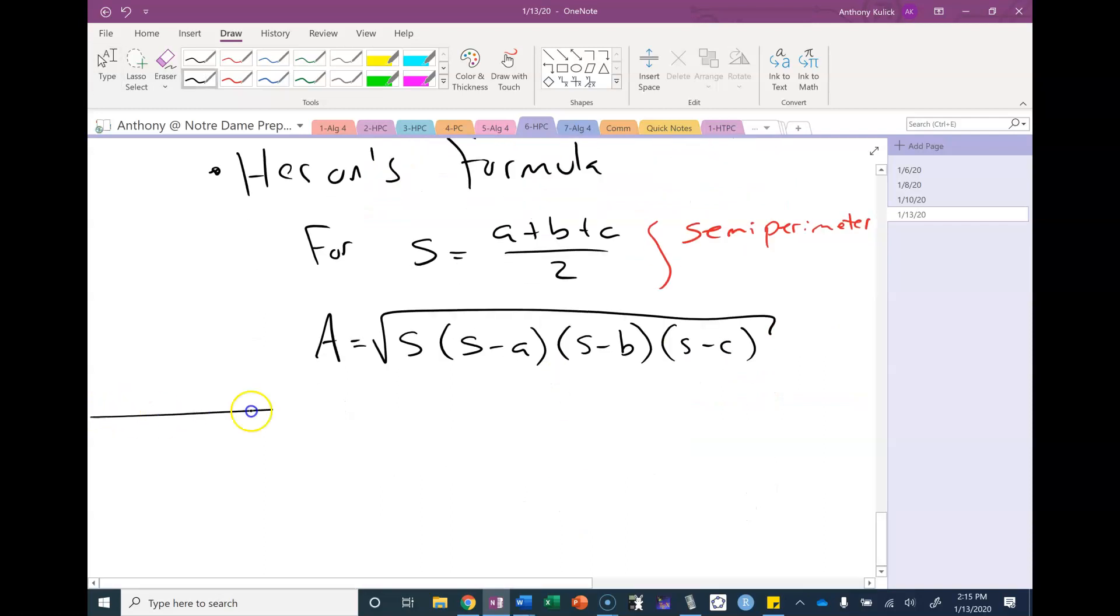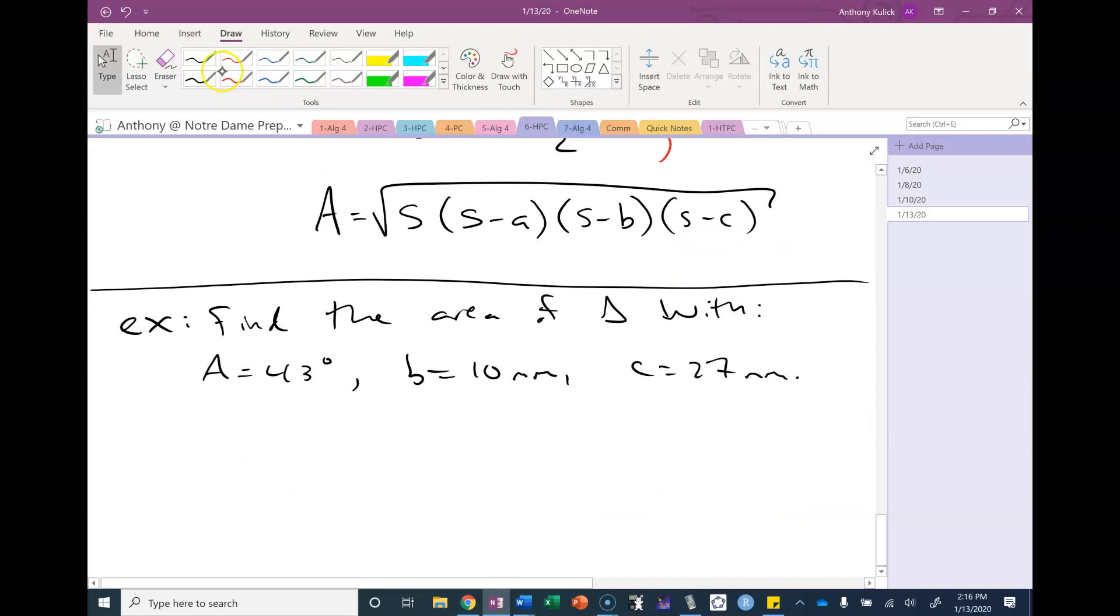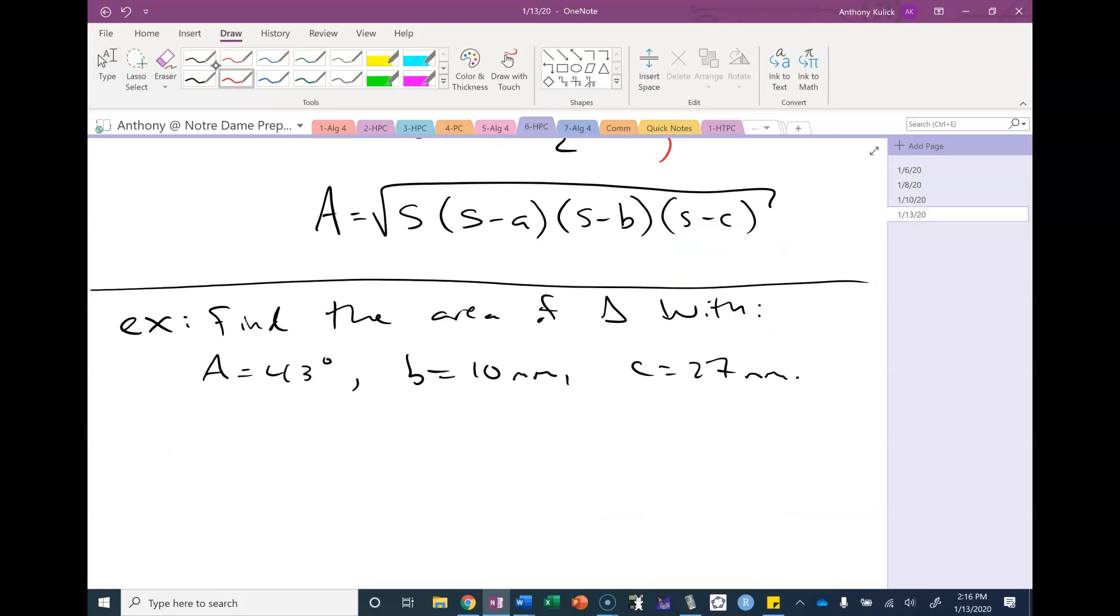Let's look at some numeric example here. Let's find the area of the triangle with angle A equal to 43 degrees, side B equal to 10 millimeters and side C equal to 27 millimeters. Hopefully it isn't too hard to see that we're working with a side angle side situation since we're given two sides and an angle but none of the labels are the same letter.